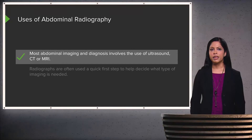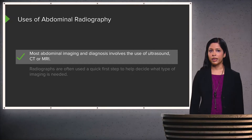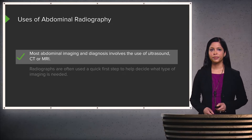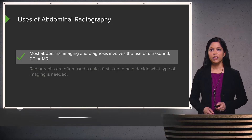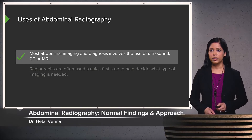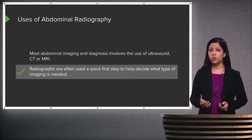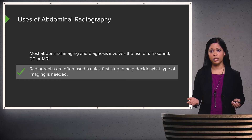Before we delve into the many abnormalities that can be found within the abdomen on an x-ray, let's review first some of the normal findings on an abdominal film and a normal approach. Most abdominal imaging and diagnosis involves the use of ultrasound, CT, or MRI. However, radiographs are often used as a quick first step to help you decide what further imaging is needed next, if any.